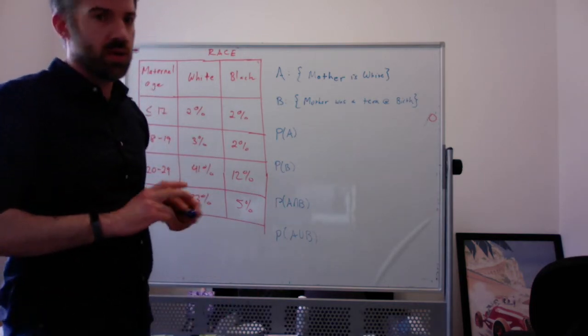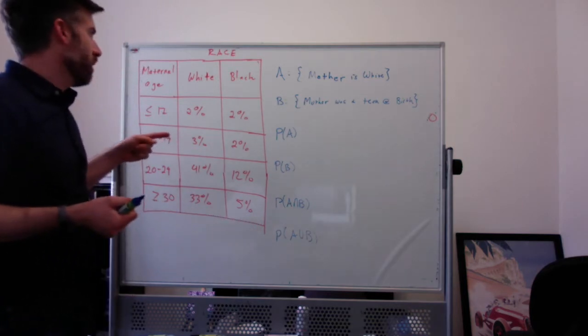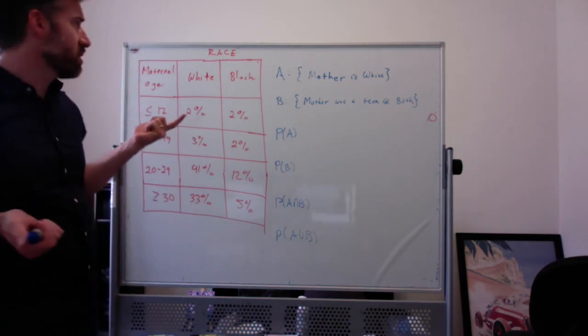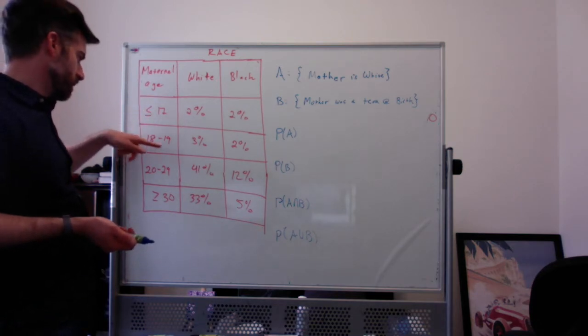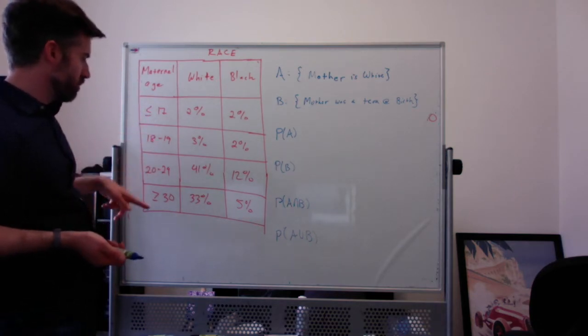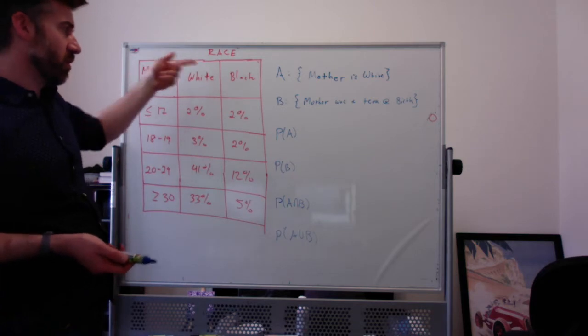So on handout number two, we've got this chart with New Jersey mothers, their maternal age, less than 17, 18, 19, 20 to 29, bigger than 30, and then their race, whether they're white or they're black.